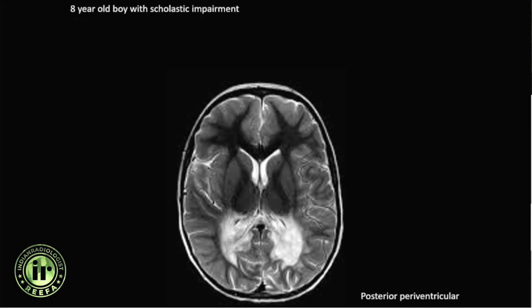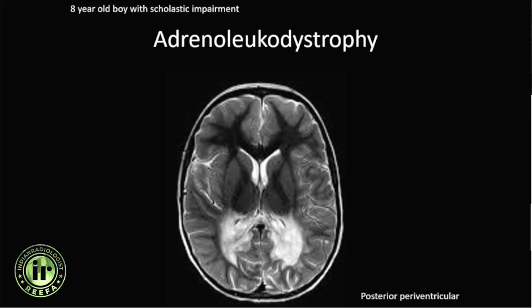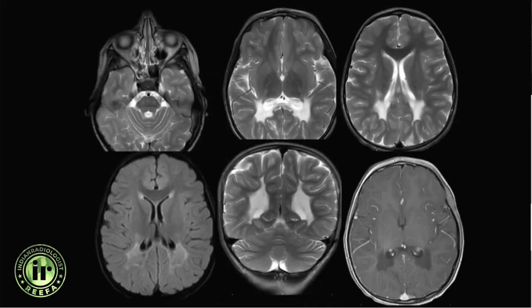Another patient — an eight-year-old boy with scholastic impairment — showed typical peritrigonal signal abnormality also involving the splenium of the corpus callosum. This is a very characteristic age and gender presentation, as this is X-linked adrenoleukodystrophy (ALD), which is much more likely to be seen in boys.